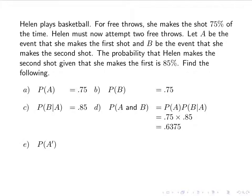The probability of A prime — the complement of A, the probability that she does not make the first shot — is 1 minus the probability of A, so 1 minus 0.75, which is 0.25.